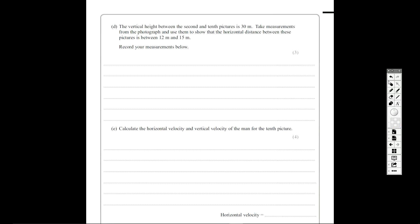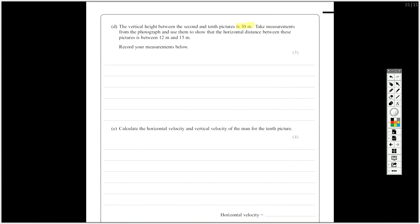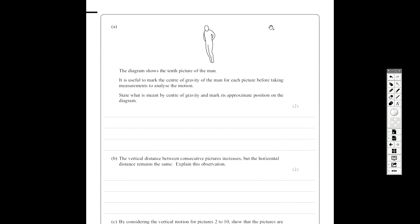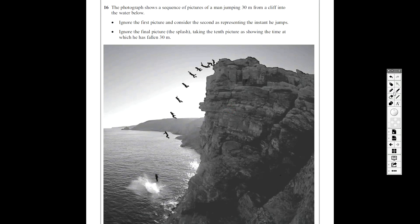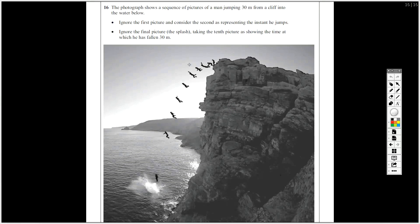So you're told again that the vertical height is 30 meters. Take measurements from the photograph and use them to show the horizontal distance between these pictures, between 12 and 15 meters. Record your measurements below. So here's the point where you actually need to go back and use the picture. I can't really do much on the screen with this, but the idea is that you use the information you're given. Vertical height between 2 and 10 is 30. So you'd measure that with your ruler. Try and do it vertically. I'd use a set square if I had one with me. And that, if it's print day 4, comes out around about 10 centimeters.